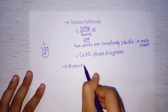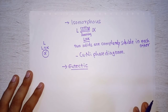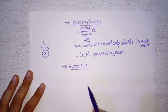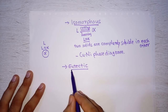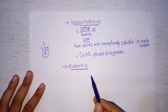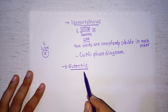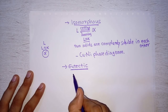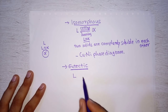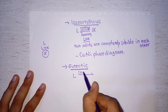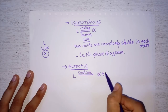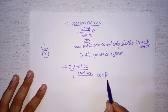The next is eutectic reaction. The name of the phase diagram is given based on what type of reactions are observed on it. So if we can observe a eutectic reaction on any phase diagram, we will say it is a eutectic phase diagram. The definition of eutectic reaction is: suppose we are observing the system at high temperature — we will have liquid — and when we cool it down, we will get a mixture of two different solids.